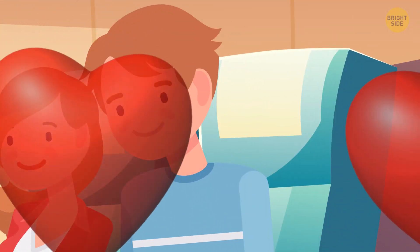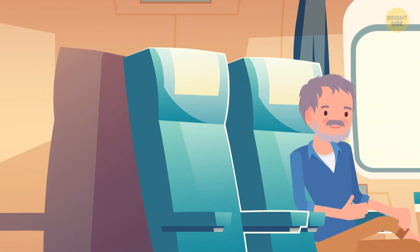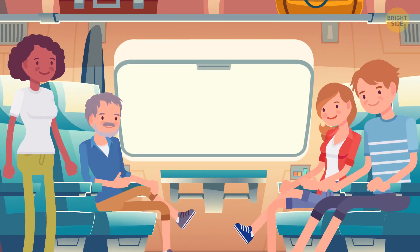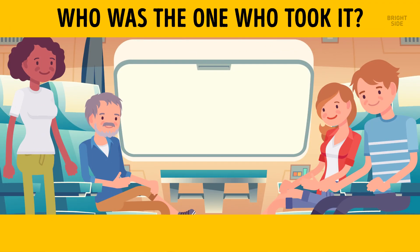James has a crush on Judith. After a while, Melissa goes to the bathroom and comes back to find the scarf missing. Who was the one who took it?